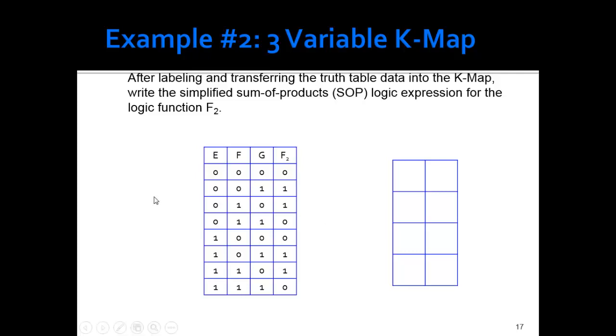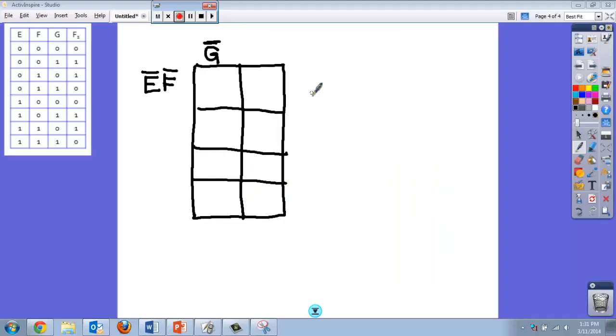Alright, so the next thing we're going to do is look at a three-variable K-Map. So now, let's look at a three-variable example. And this one has the terms E, F, and G. And I went ahead and labeled this first one here.